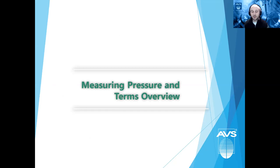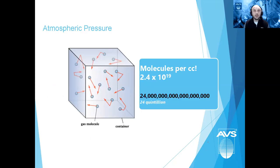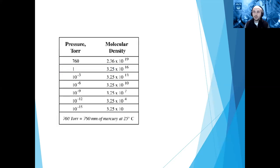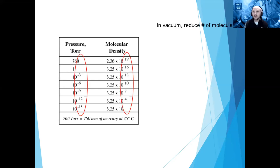Before we get into vacuum, I like to start with pressure in general, because it gives an indication of a lot of the gauges we use. At atmospheric pressure, we're looking at about 24 quintillion molecules per cc. If we look at atmospheric pressure and then levels of vacuum, we correlate that to molecular density and we can see a direct correlation. As we start to reduce our pressure — we're all here because we work in some level of vacuum — we typically reduce our molecular density.